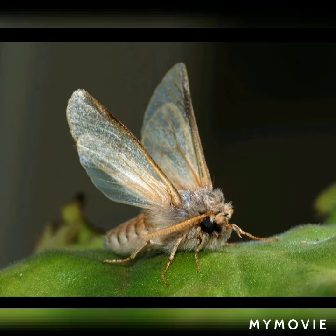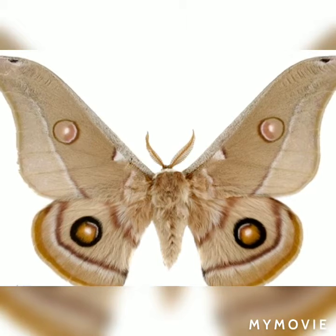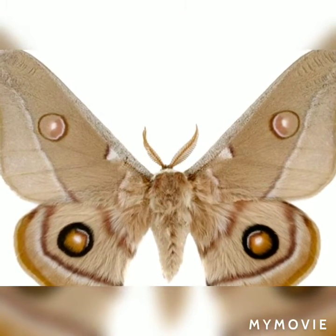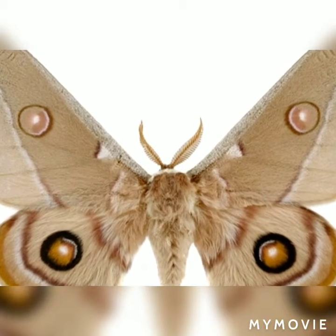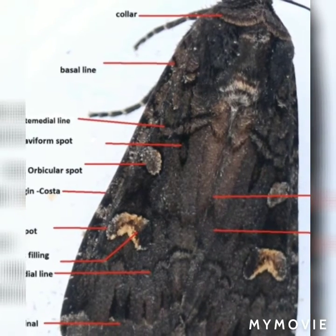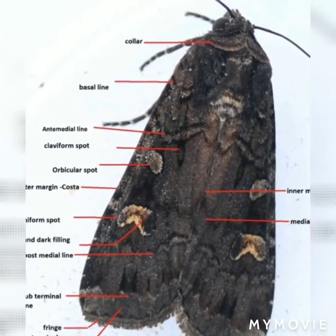Moth closely resembles the butterfly except in certain differences. Body is stout and divisible into head, thorax, and abdomen. Head is very small and bears very short feathery antennae. The wings are held horizontally during the resting period.